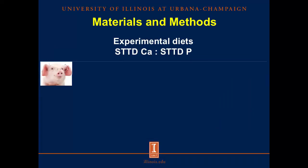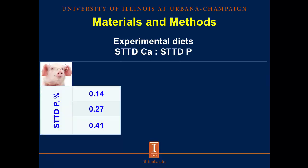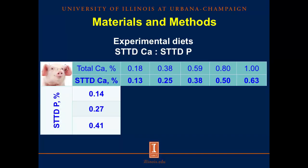Moving on to the materials and methods: 15 corn-soybean meal-based diets were formulated using 3 levels of digestible phosphorus from 0.14 to 0.41%, representing 50, 100, and 150% of the digestible phosphorus requirement, and 5 levels of total calcium from 0.18 to 1%, representing 30, 60, 100, 140, and 170% of the requirement for total calcium. We did not include phytase in these diets, so we used the corresponding standardized total tract digestible calcium values of the ingredients to calculate the concentration of digestible calcium in the diets.